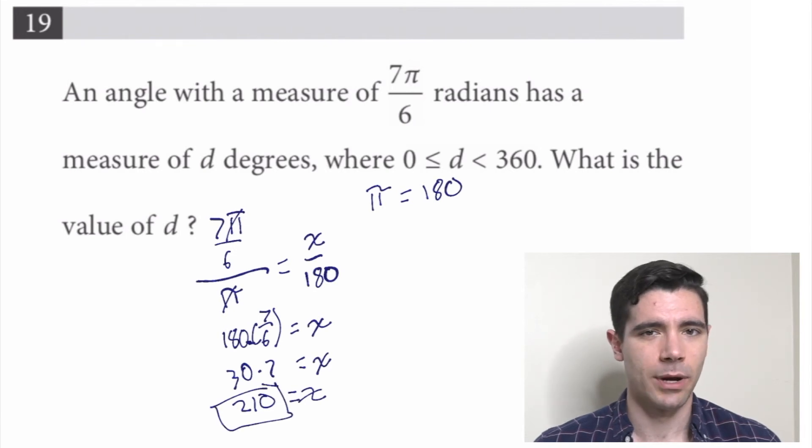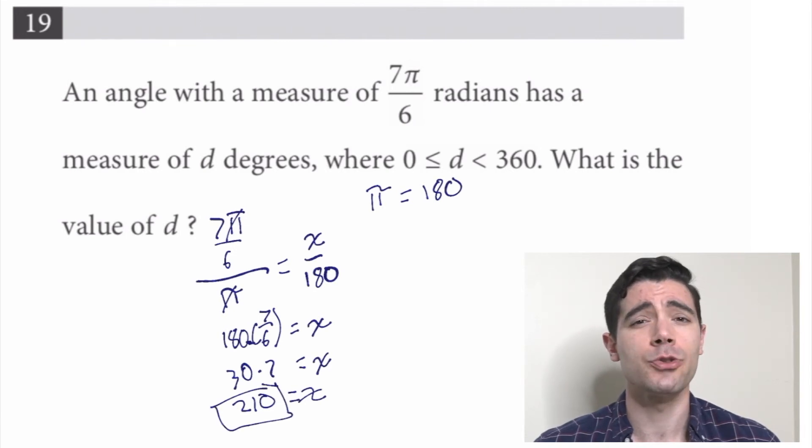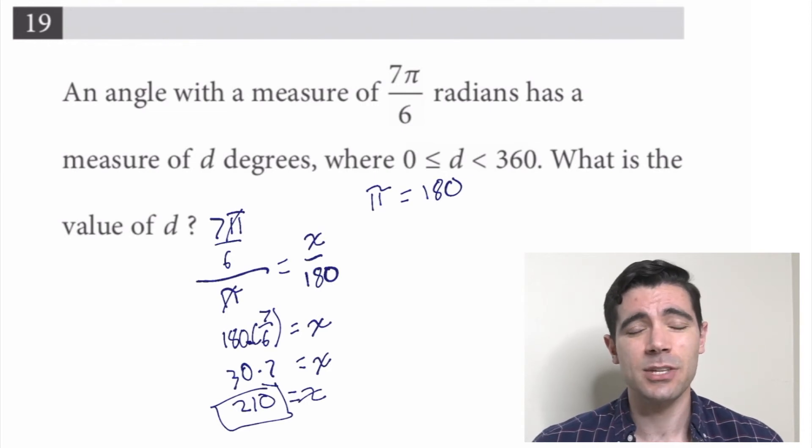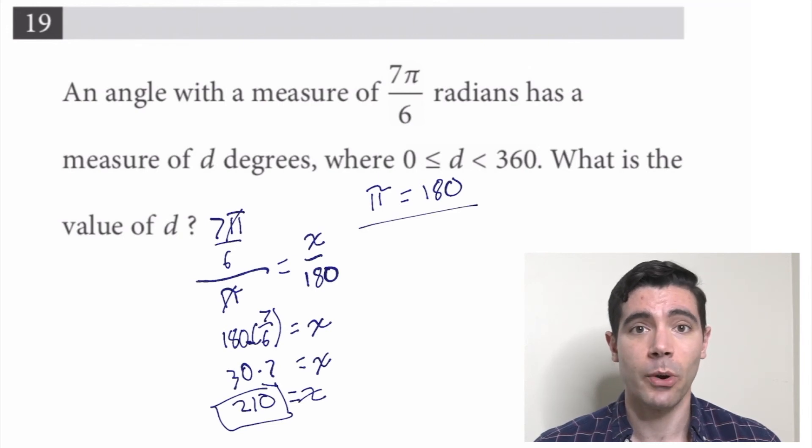Some students feel a bit overwhelmed by questions like this because they're not 100% confident that they have a full grasp on what radians are, but in this case we didn't even need that. As long as you know that π radians is the same as 180 degrees, we're able to set up a proportion where we knew three of the quantities and solve for that last one, the angle in degrees: 210.